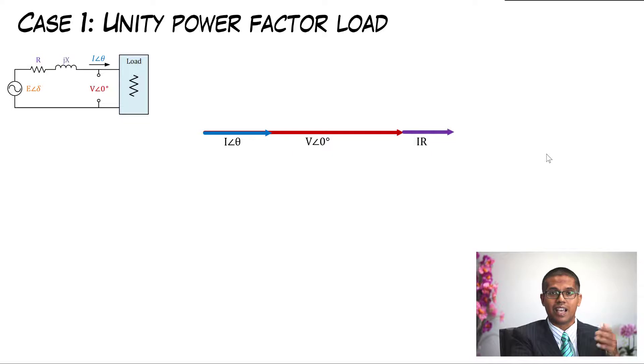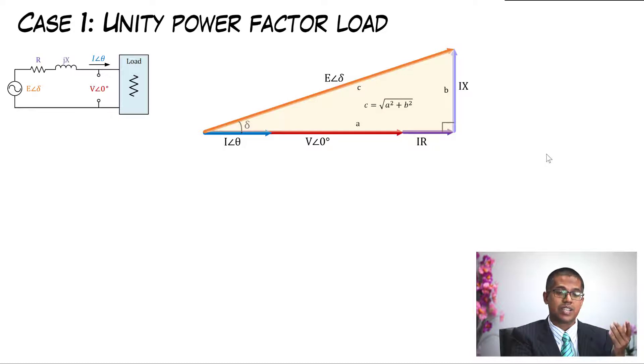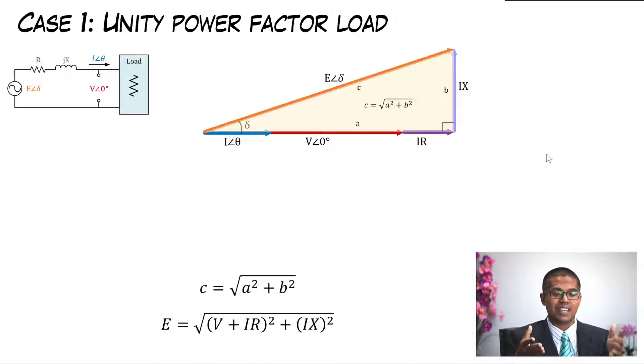And where is IjX? IjX is always perpendicular with the IR. Then we got our E. E is the vector addition of V plus IR plus IX. So now we will use our Pythagoras theorem, where you got three sides of a triangle a, b, and c, and you already know c equals the square root of a squared plus b squared. So E, our hypotenuse now, is E equals the square root of the sum of the first part, V plus IR, squared, plus the second part, IX squared.